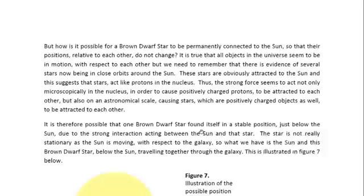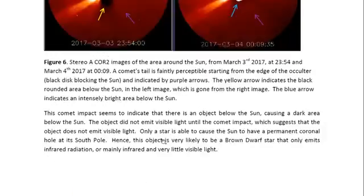So the comet impact seems to indicate that there is an object below the Sun causing a dark area below the Sun. The object did not emit visible light until the comet impact, which suggests that the object does not emit visible light normally. Only a star is able to cause the Sun to have a permanent coronal hole, because only a star would have a high enough magnetic field. And this object is very likely to be a brown dwarf star that only emits infrared radiation, or perhaps mainly infrared, and some but very little visible light.